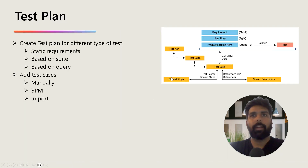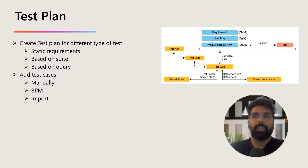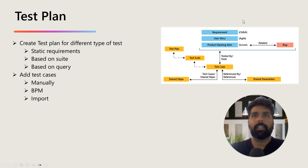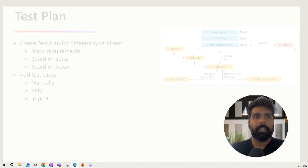Going back to the PowerPoint: the hierarchy is test plan, then test suites — and this is already discussed in a previous part of this series, possibly part five, six, or seven, where I talked about how to use Azure DevOps to manage your process catalog or requirements. Now against these test suites, we need to have test cases created.